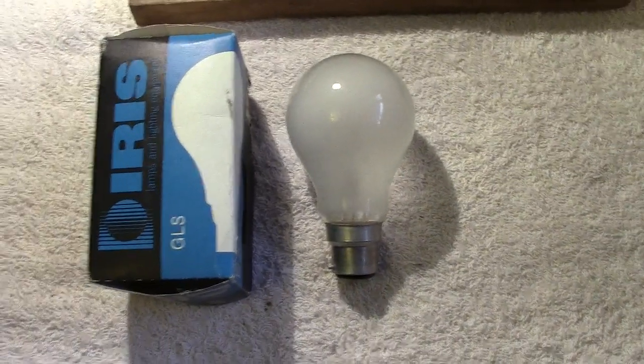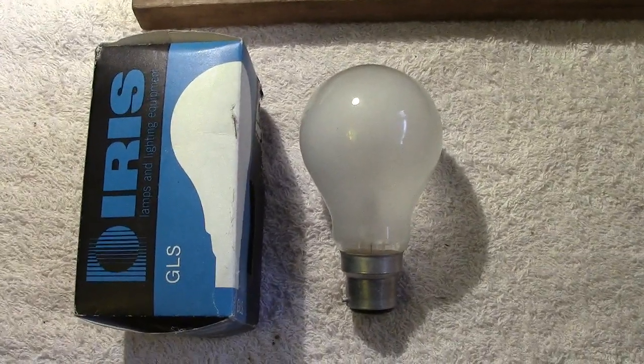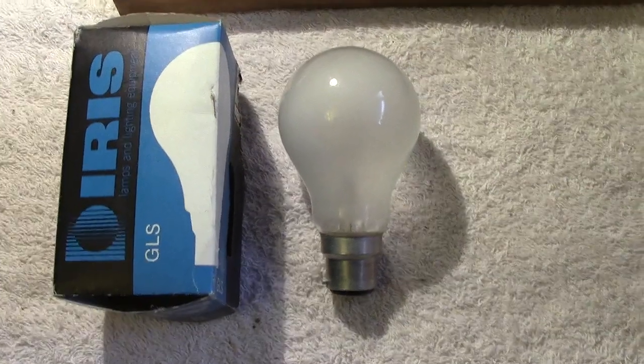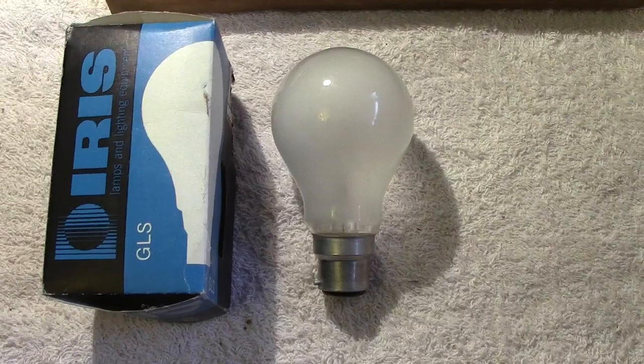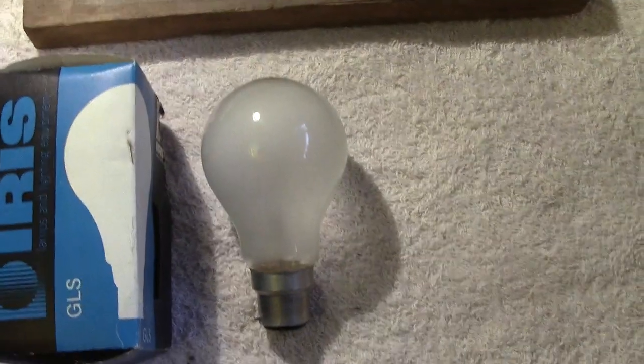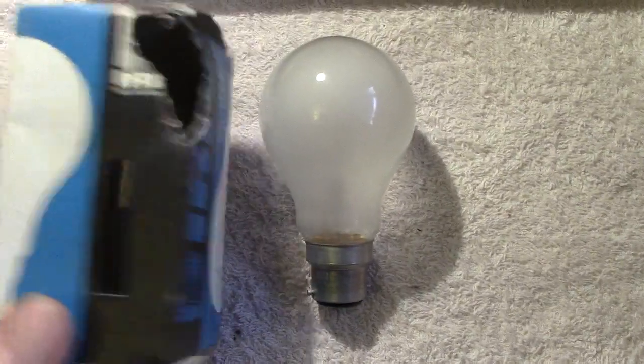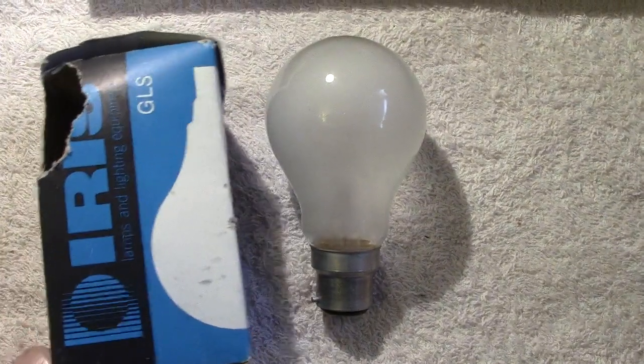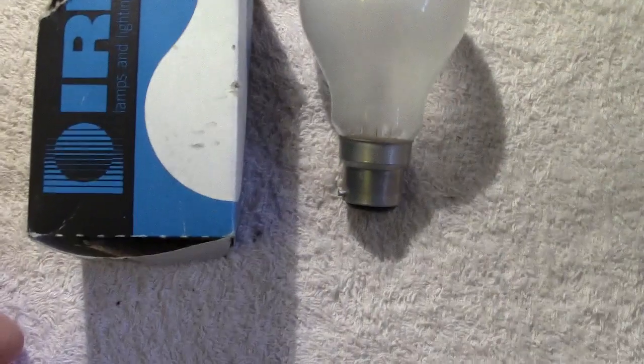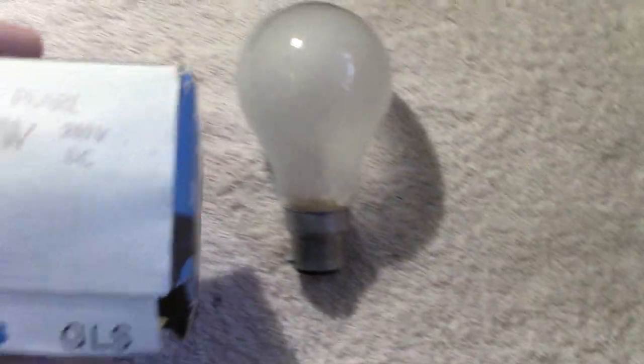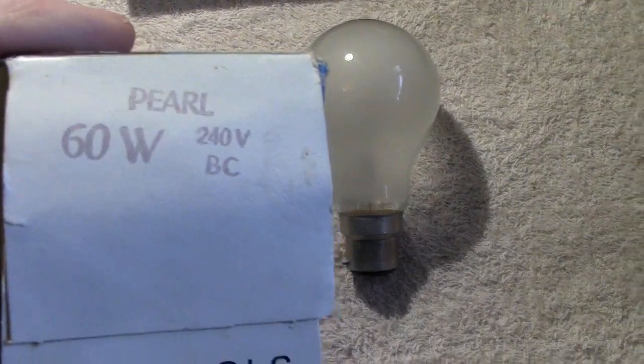Hi there again. The next lamp we've got is from France, made by Iris, quite a well-known French brand. Once again, it's not ancient, but it wasn't bought last week either. On the box now, Pearl 60 watt, 240 volt BC GLS.